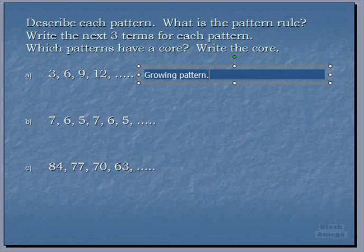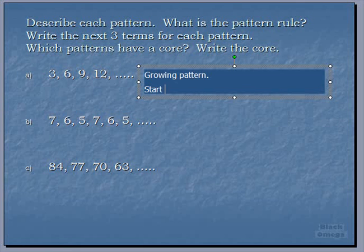It's increasing all the time and it's increasing by how much. We start at 3. And what do we notice? What do we add to get 6? And then what do we add to that to get 9? What do we add to get 12? That's right. We add 3 each time. And that's our pattern rule. Start at 3 and add 3 each time.